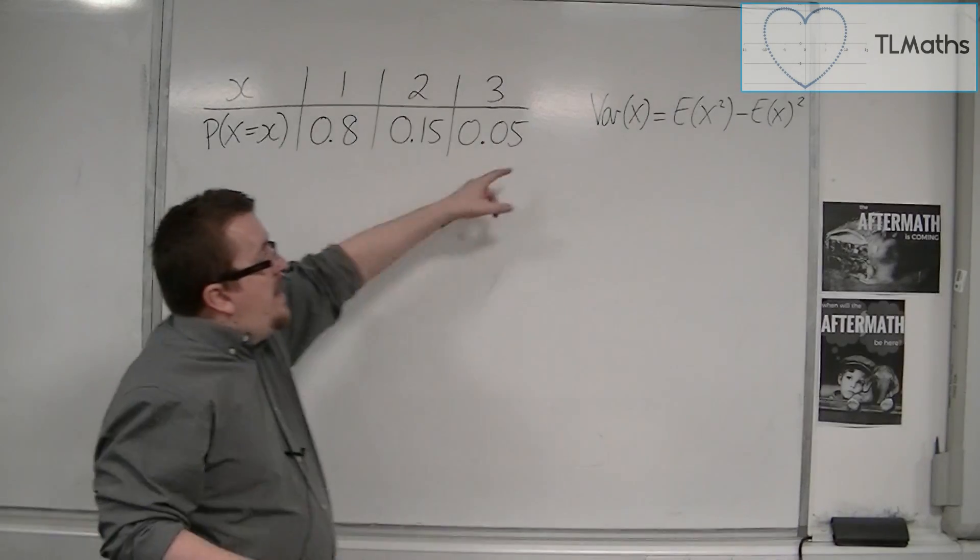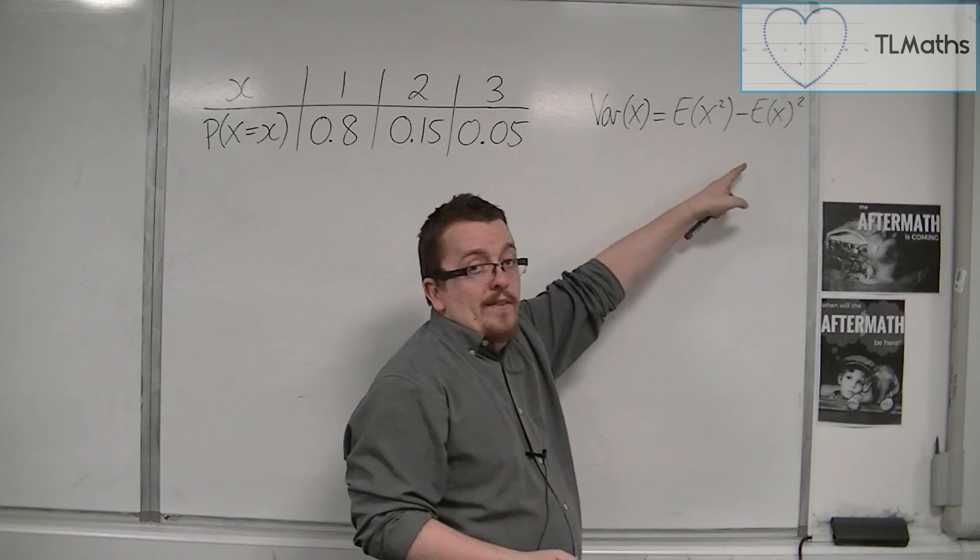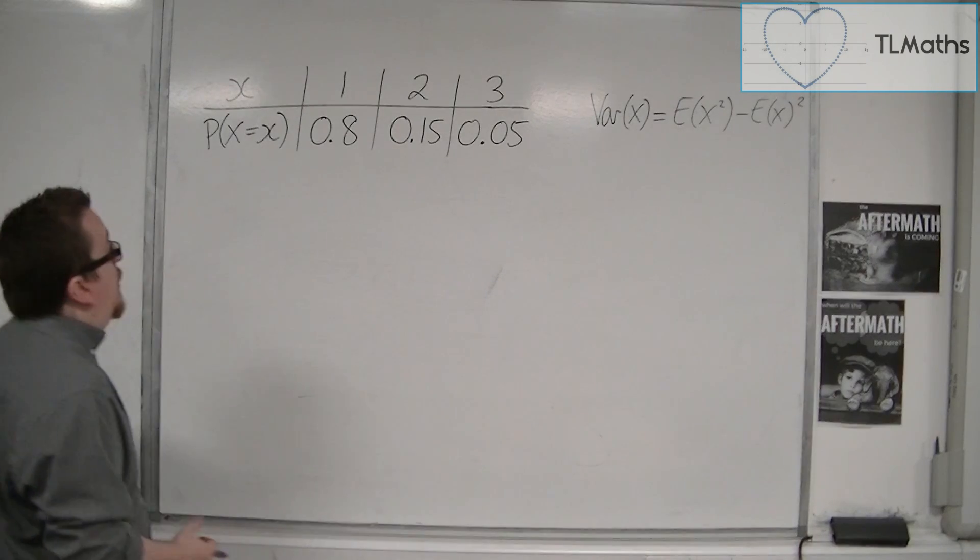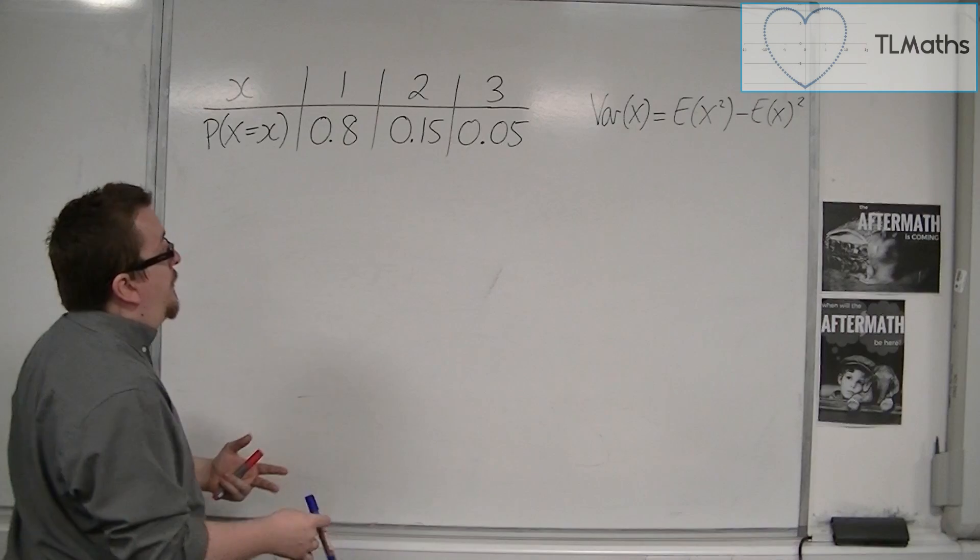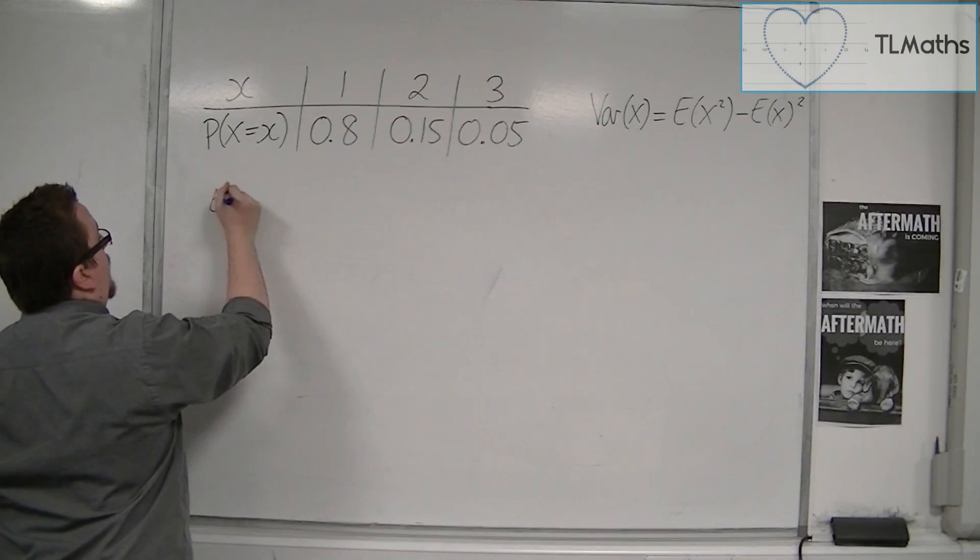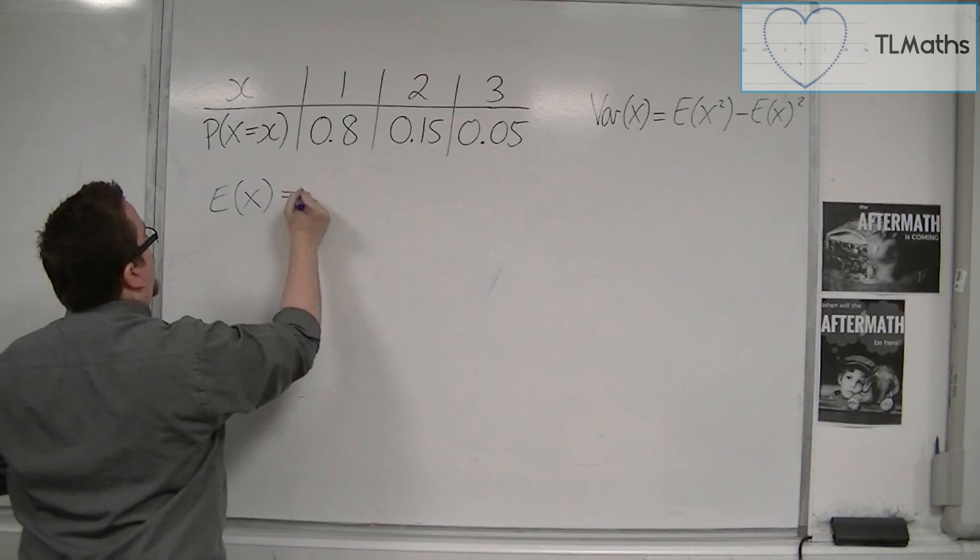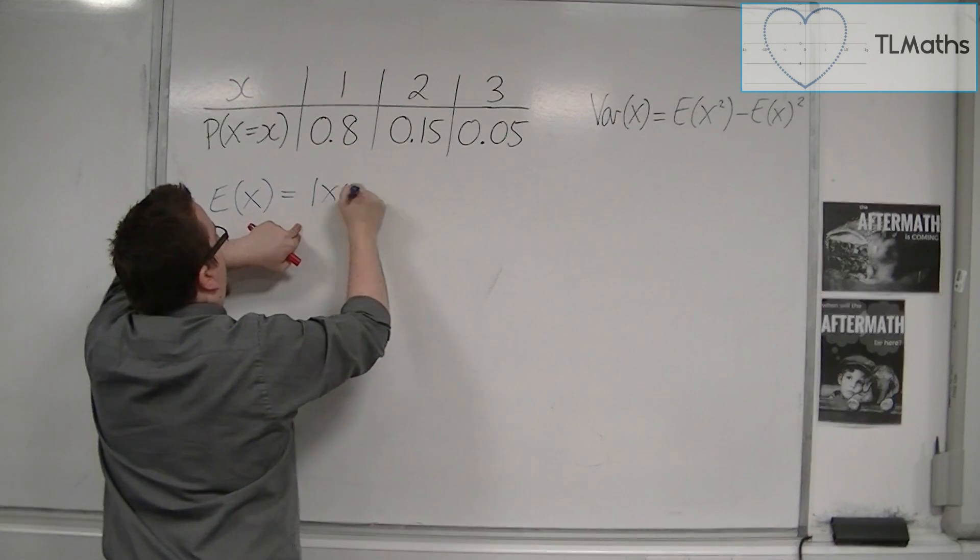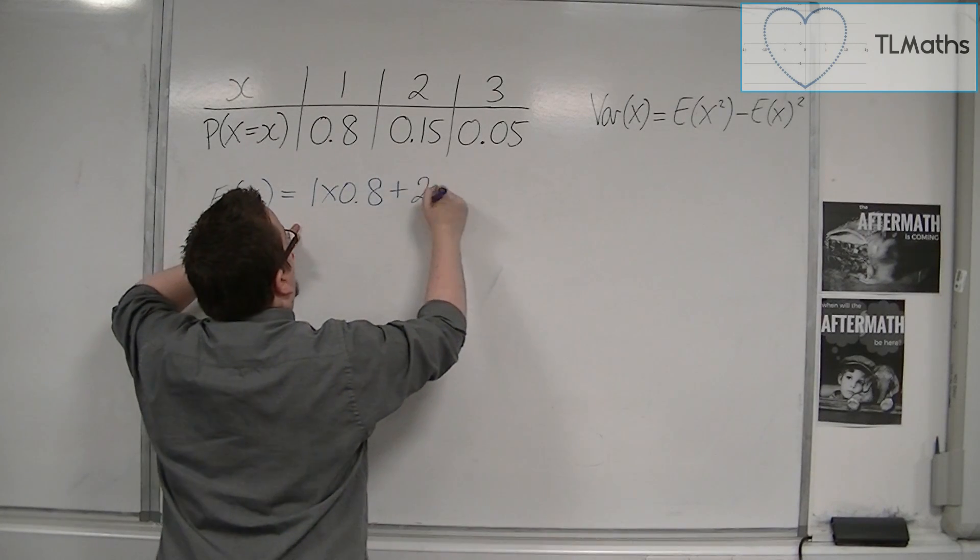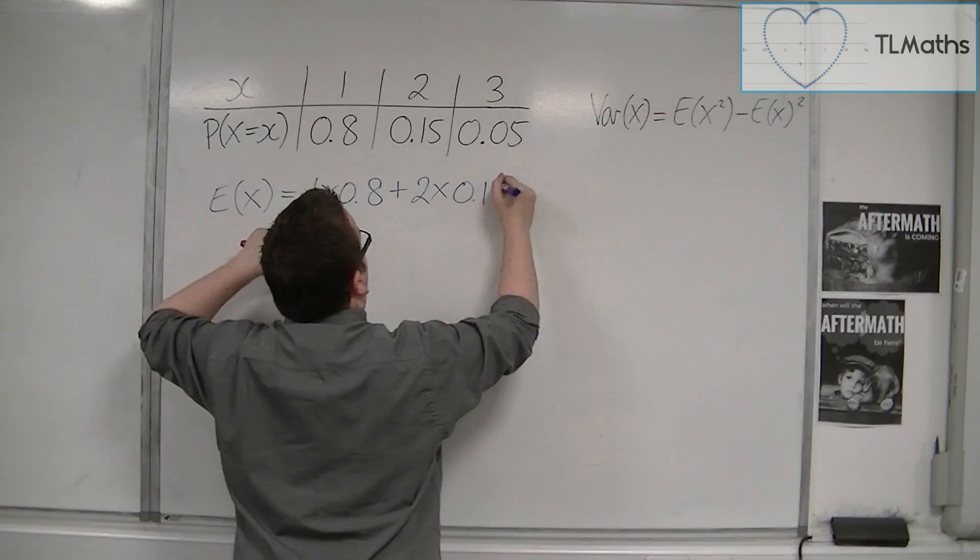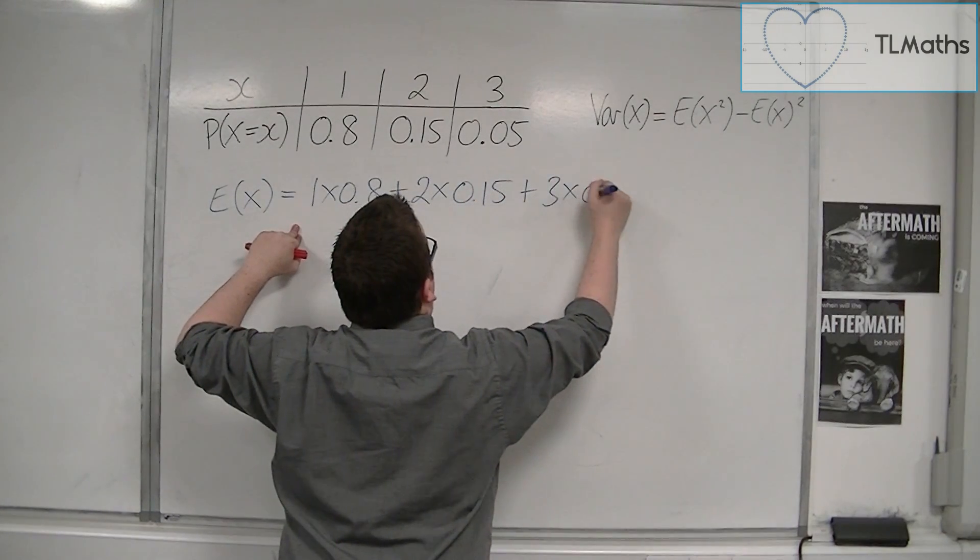What we need is E of X squared and E of X. So it would make sense to work out E of X first. E of X is equal to 1 times 0.8 plus 2 times 0.15 plus 3 times 0.05.